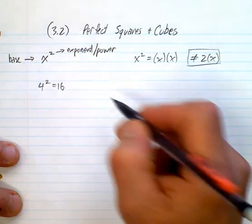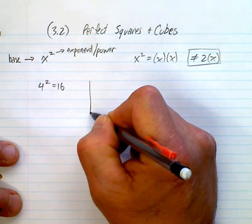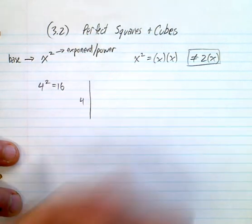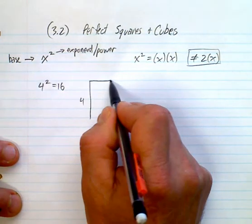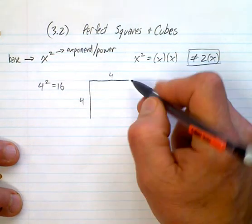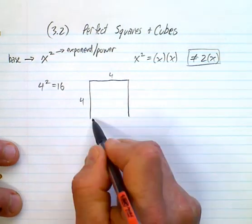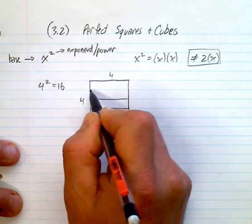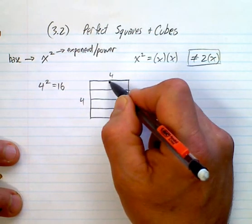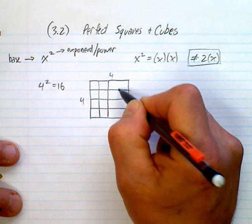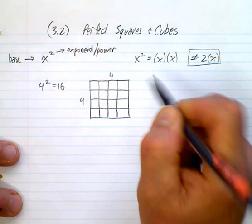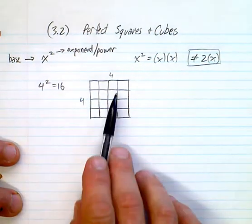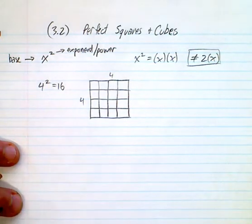But where do we come up with the word square? Because if you have something that is 4 long, and then you make it 4 wide and make it into a square, most of you could see that it would be 4 times 4. So 4 squared gives you 16 little squares in there.